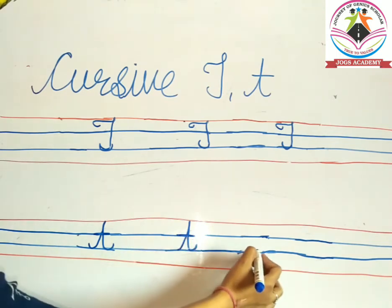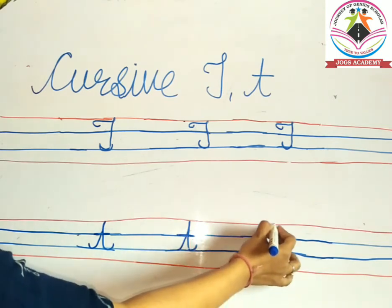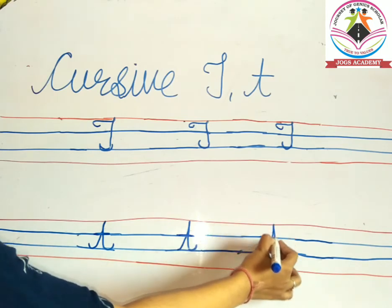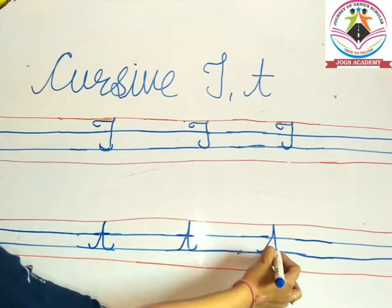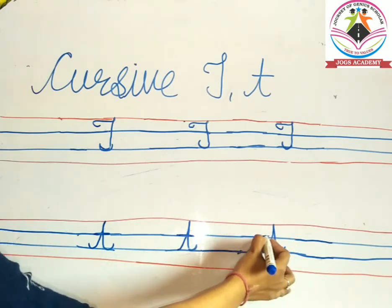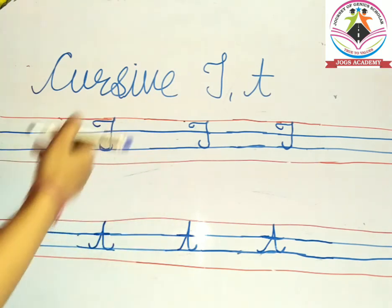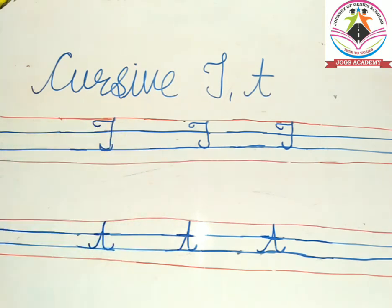Again, standing line upward, standing line downward and make a curve and a sleeping line. So this is capital cursive T and this is small cursive t. So practice. Thank you.